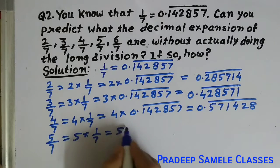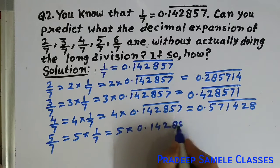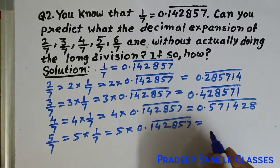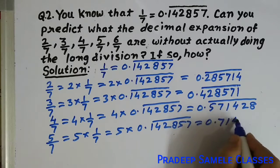Similarly, we will find the value of 5 by 7. 5 into 1 by 7 is equal to 5 into 0.142857 bar. When we multiply 5, the value becomes 0.714285 bar.